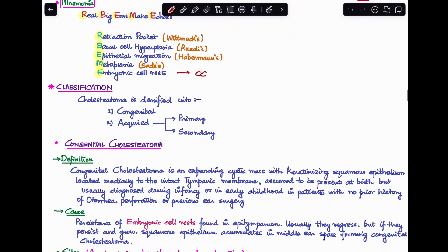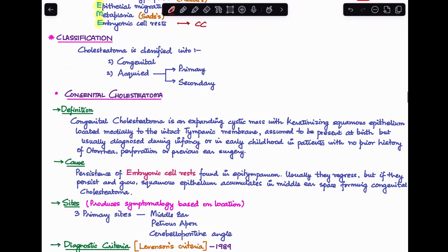Let's talk about the classification. What are the different types of cholesteatoma? Cholesteatoma can be classified into two major types: congenital and acquired. Acquired can be further classified into primary and secondary types.